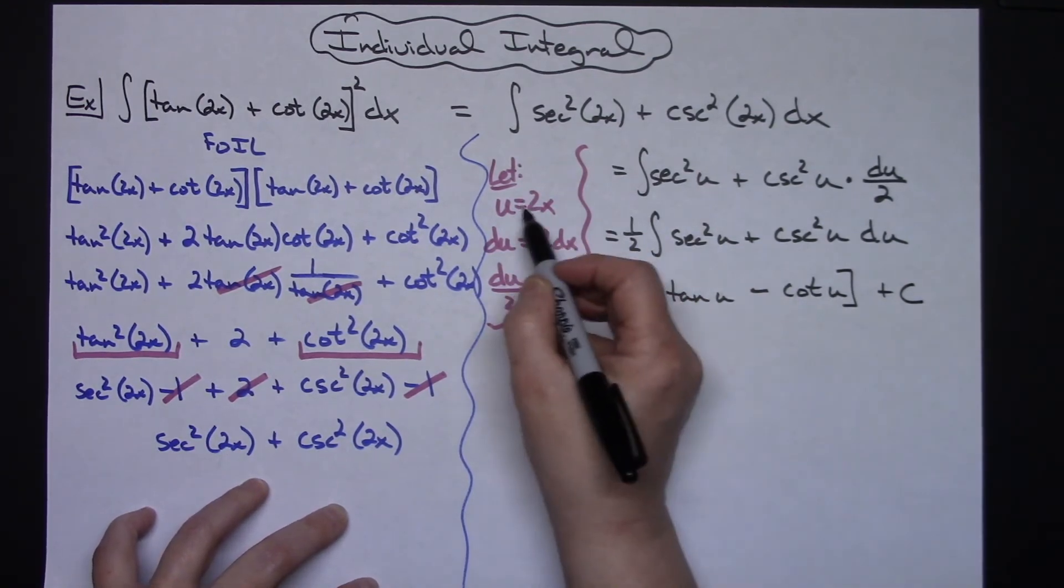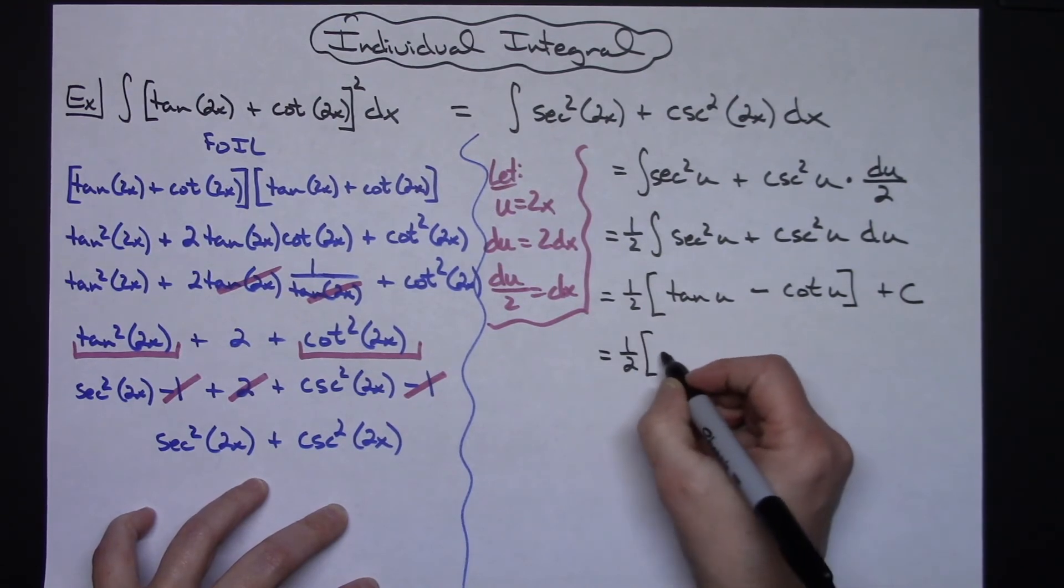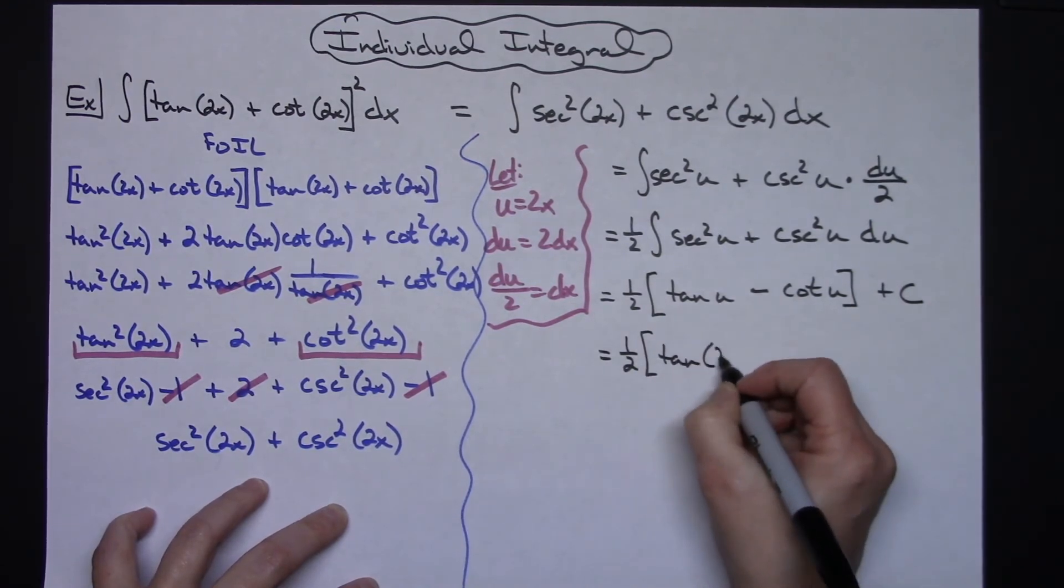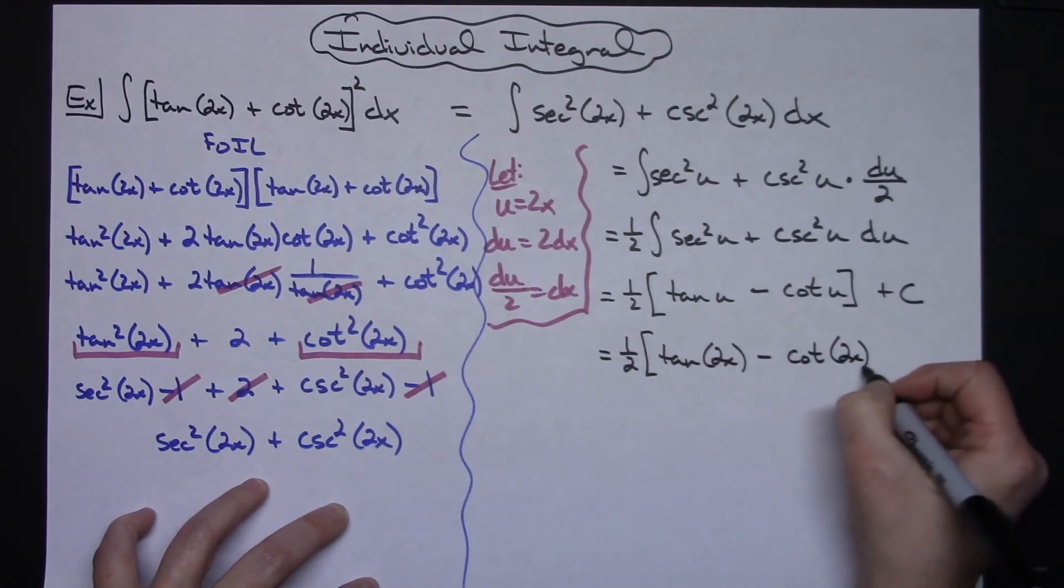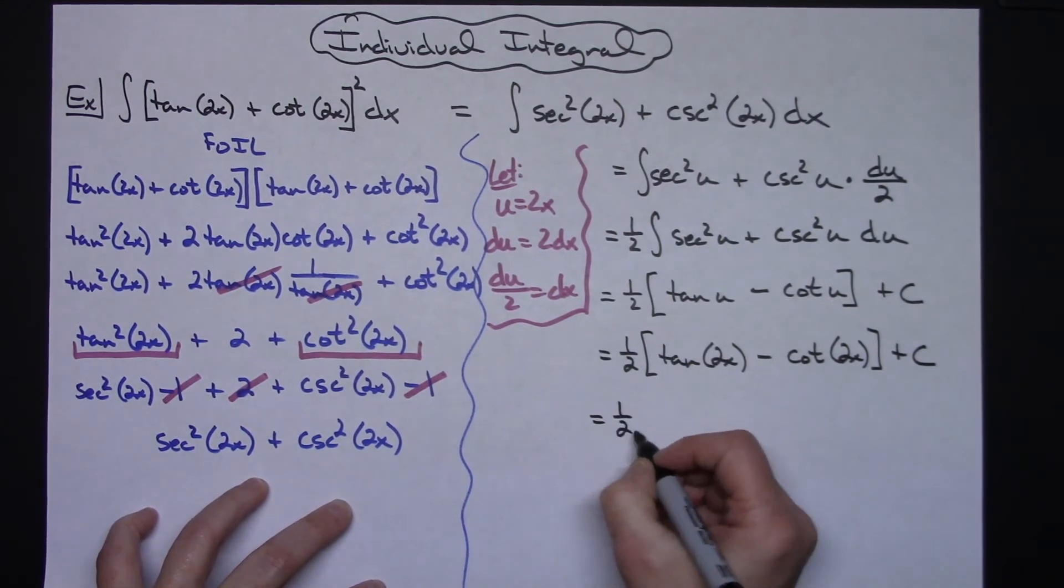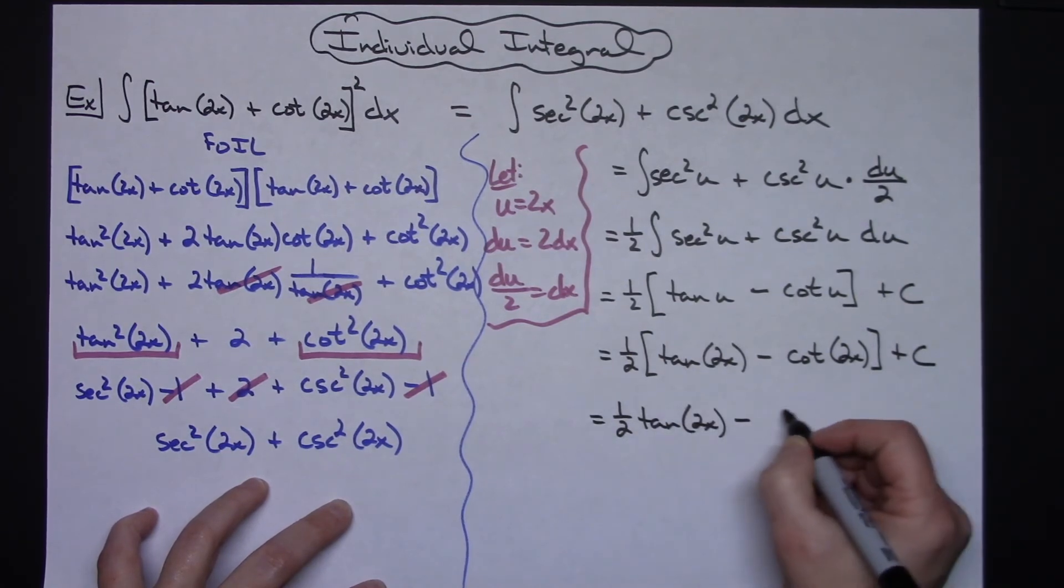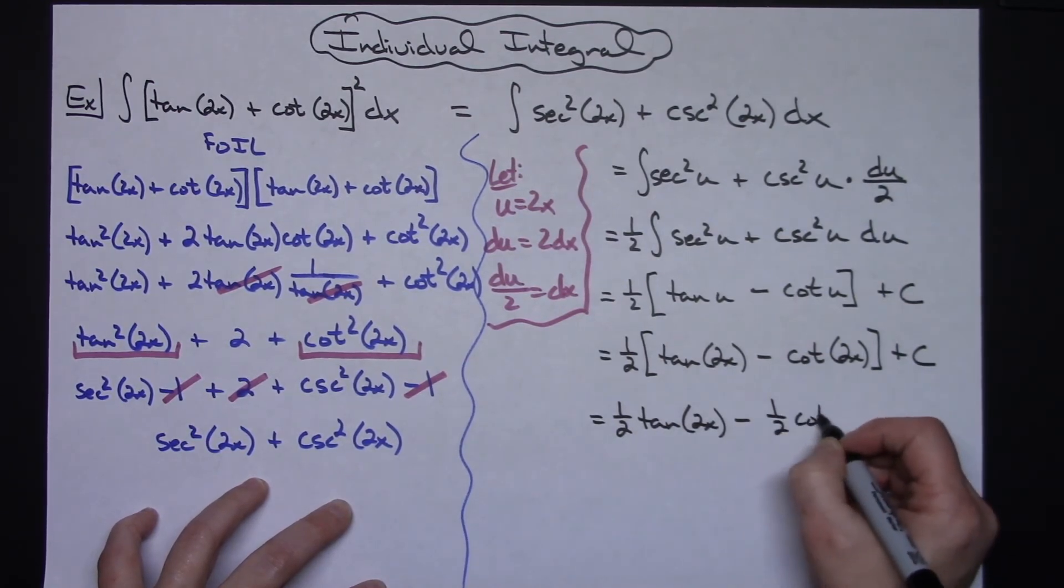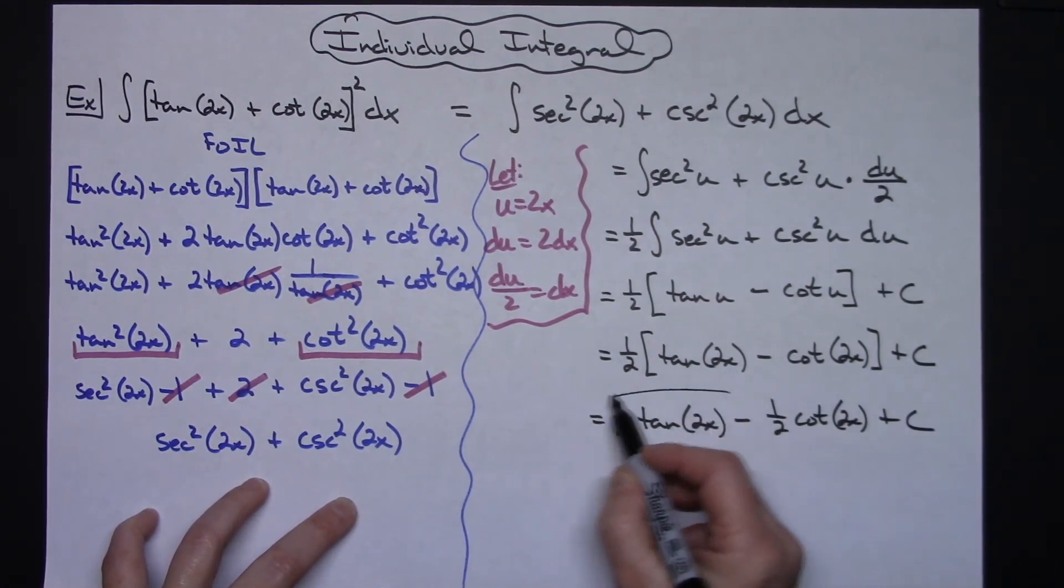I can replace my u's with what we originally let it be. So there's a 1 half and then tangent of 2x minus cotangent of 2x and then I can go ahead and distribute that 1 half. So we'll have a 1 half tangent of 2x minus a 1 half cotangent 2x and then plus c for a final answer.